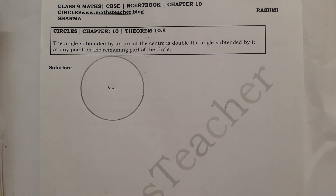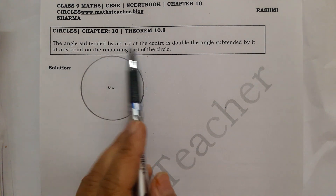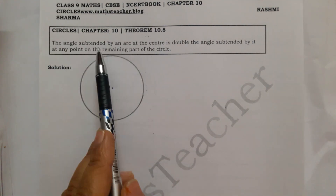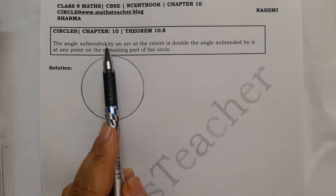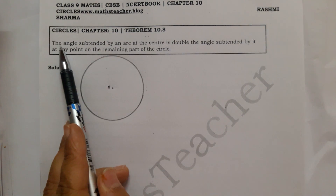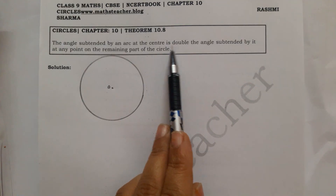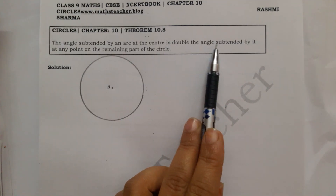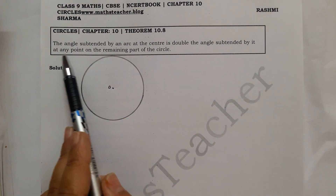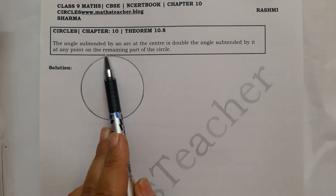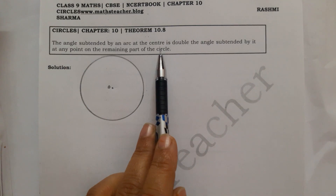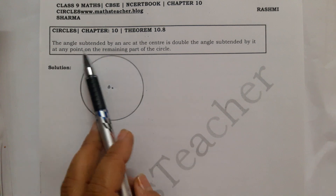Hello viewers, welcome to my channel. I am Rashmi and I am a math teacher. In this video we are solving chapter 10, theorem 10.8. The important theorem: the angle subtended by an arc at the center is double the angle subtended by it at any point on the remaining part of the circle.